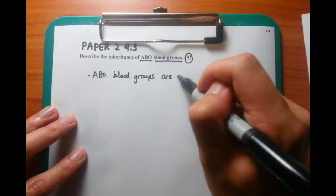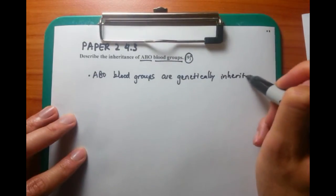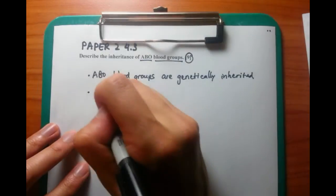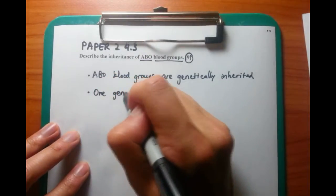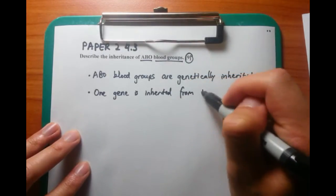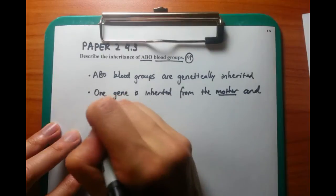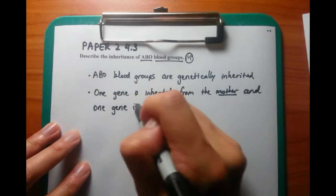Now the first thing you have to do is talk about the inheritance, the mode of inheritance. How do ABO blood groups get transferred from father and mother to children? And it's via genes, so they're genetically inherited. One gene is inherited from the mother, and the other gene is inherited from the father. And this should be basic genetics that you should all know.